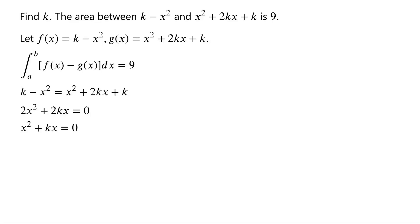Factor the left hand side of the equation, we have x times x plus k equals 0. So, x equals 0 or x equals negative k. Let a equal negative k and let b equal 0.